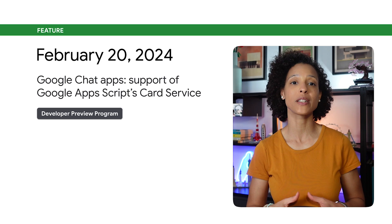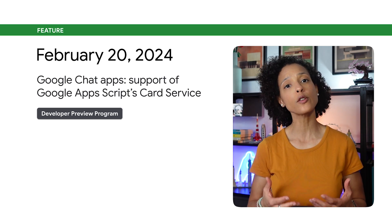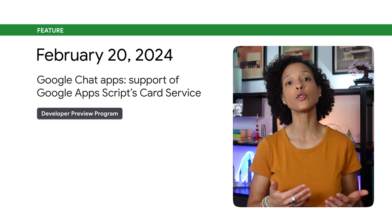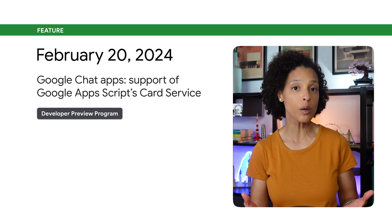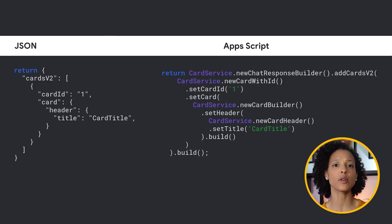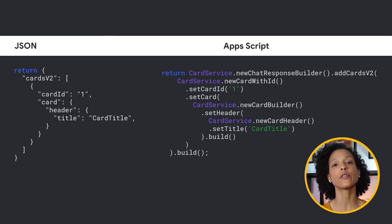Google Chat Apps now support Google Apps Script's card service. If you've built your chat app using Apps Script, you can use the card service to build user interfaces such as card messages and dialogs. On screen, you see an example of building a card — on the left side, how this is done in JSON, and on the right, how the same is done using the new Apps Script card service. This new feature is made available through the Developer Preview Program.